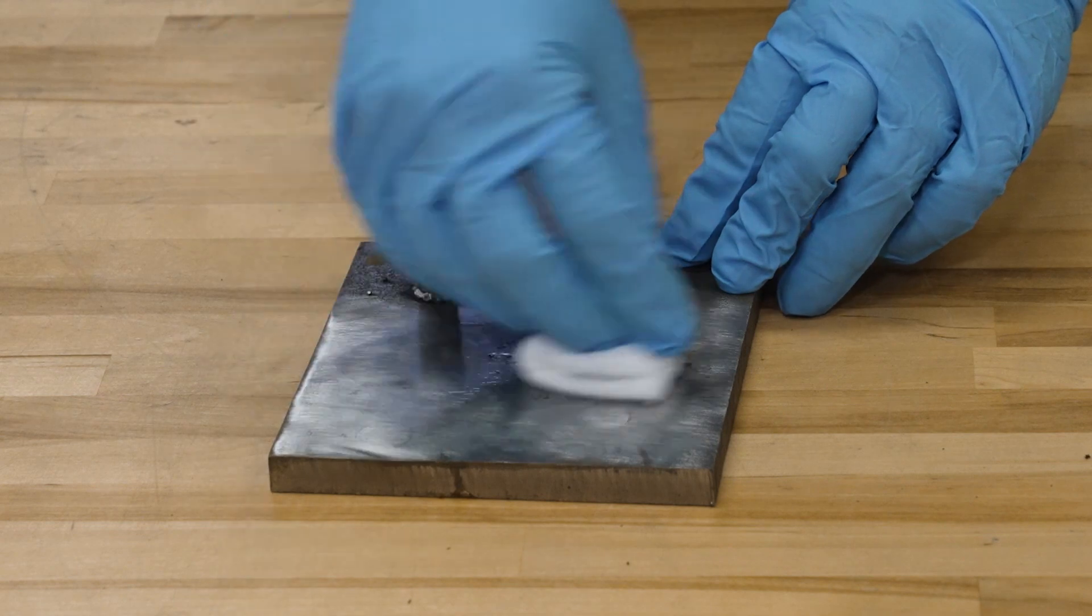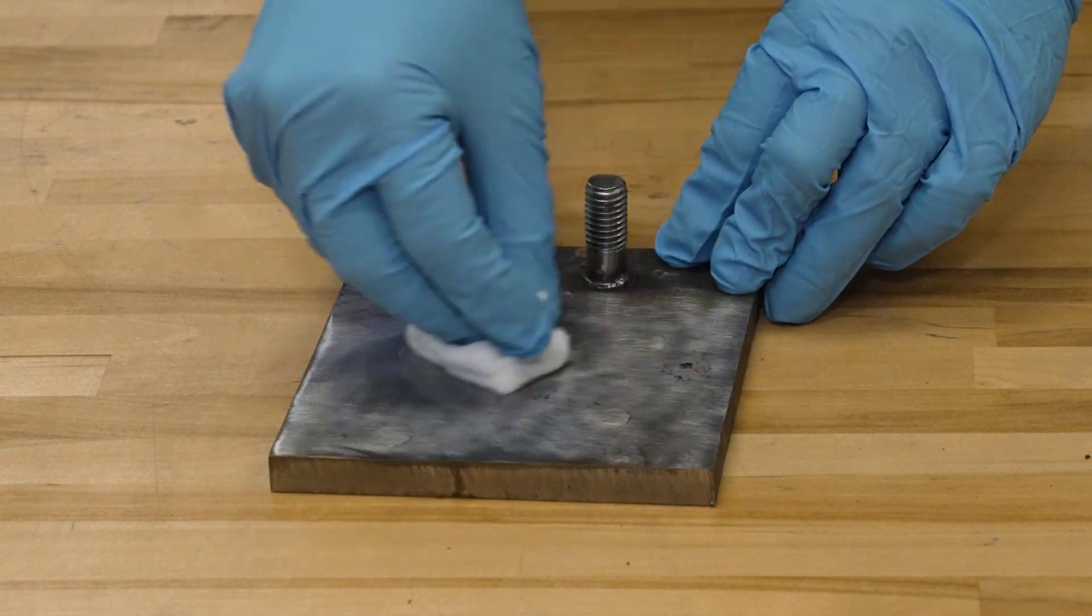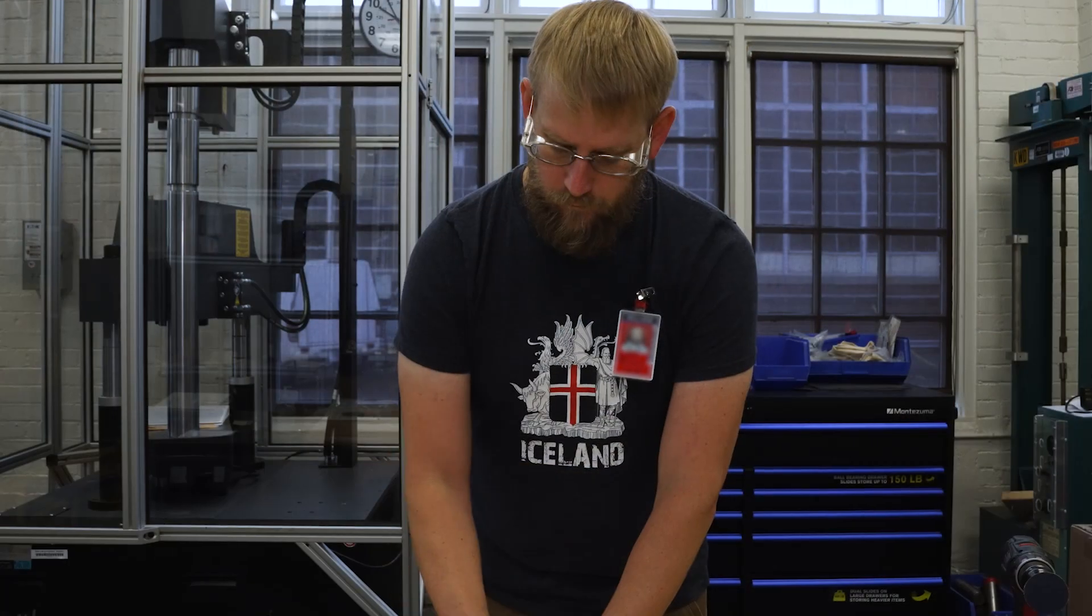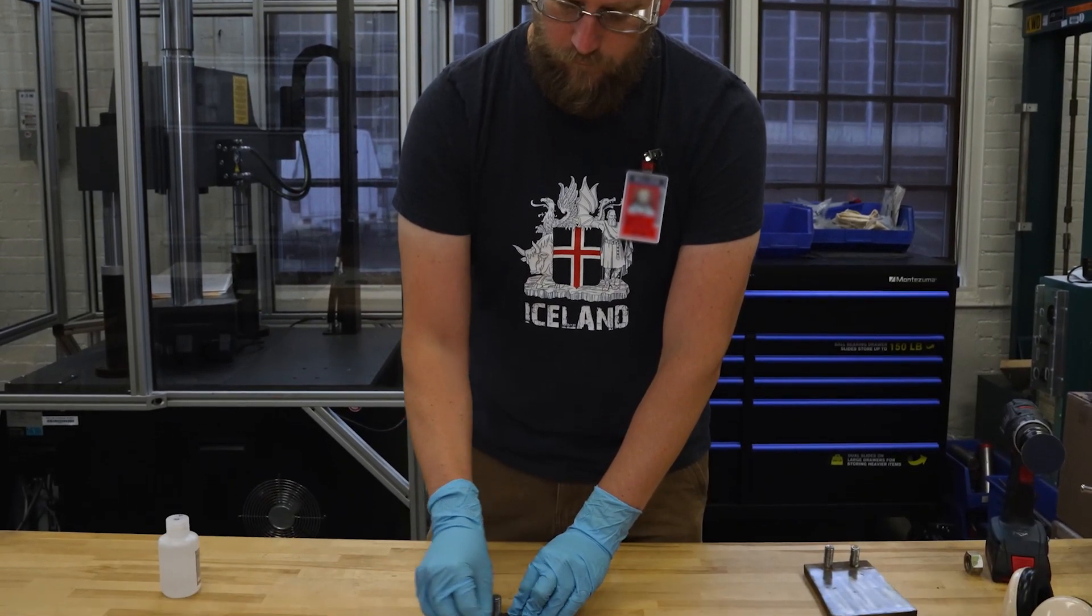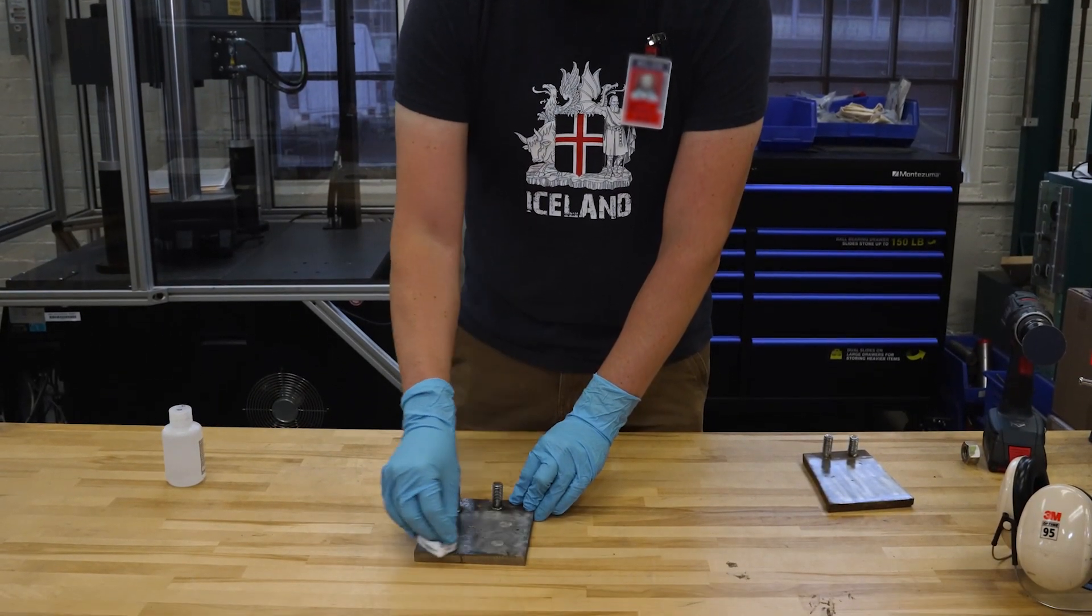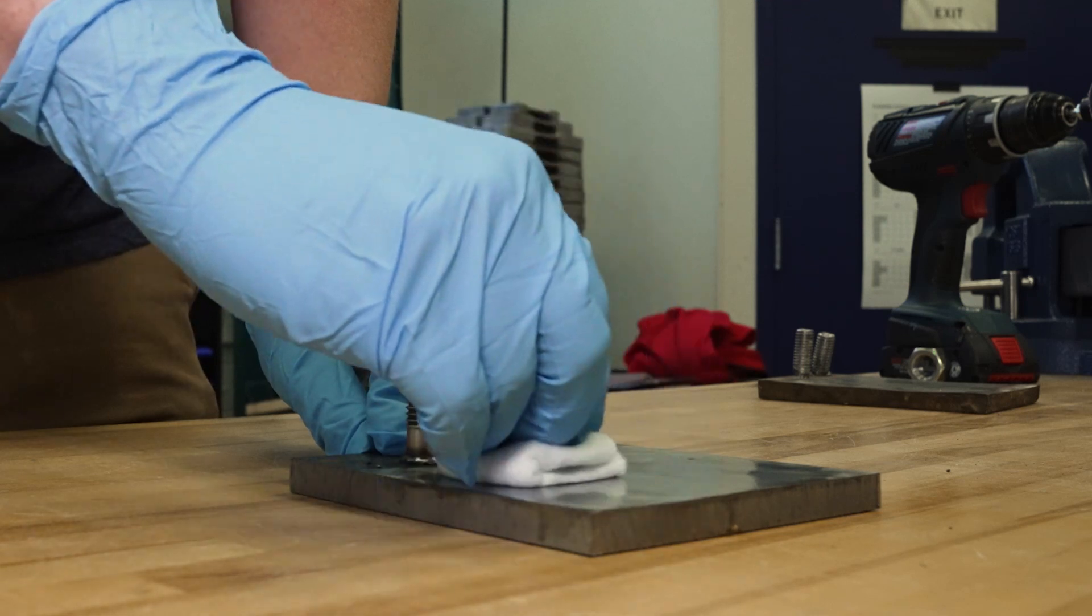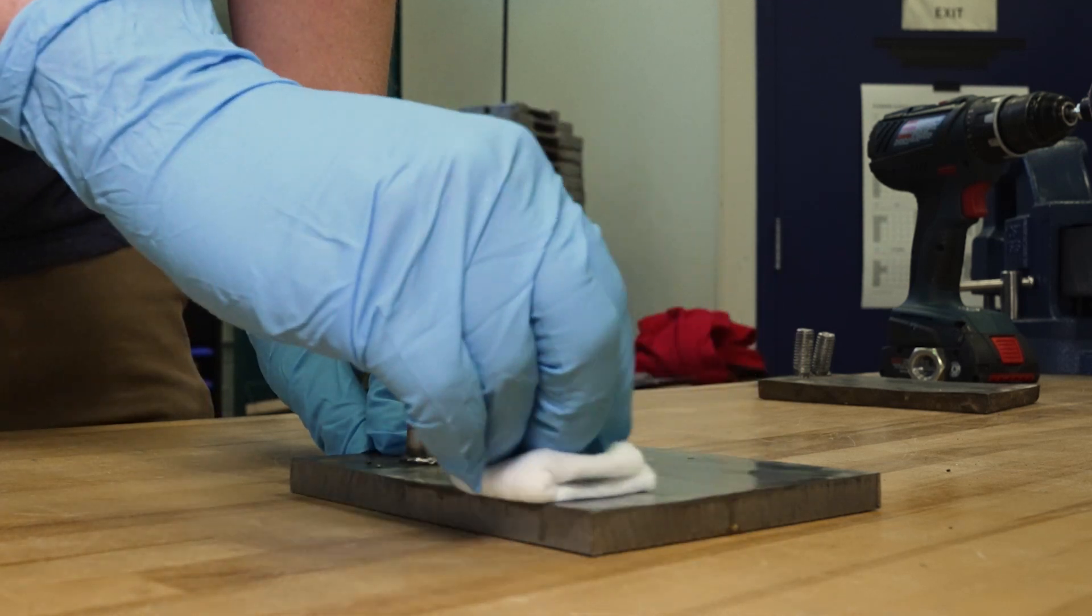Acid etching is conducted in the lab to reveal metallurgical features such as grain structure. On the waterfront, acid etching is used to expose weld features, as well as dissimilar metal boundaries such as stainless steel welded to high yield steel.